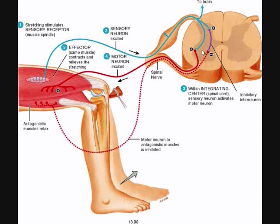The third component is the integrating center, which is going to be in the central nervous system. That's the part of the reflex arc that is going to be the decider — what's going to decide what kind of action takes place. The decision is pretty much already made in reflexes because they're automatic and predictable, but the area where that takes place is in the gray matter of the central nervous system. In this example, in the spinal cord, the integrating center is the synapse here between the sensory and motor neuron. The fourth component is the motor neuron, depicted in red in this image.